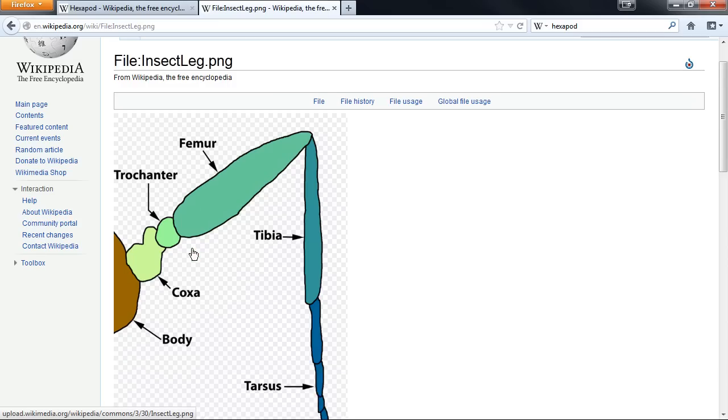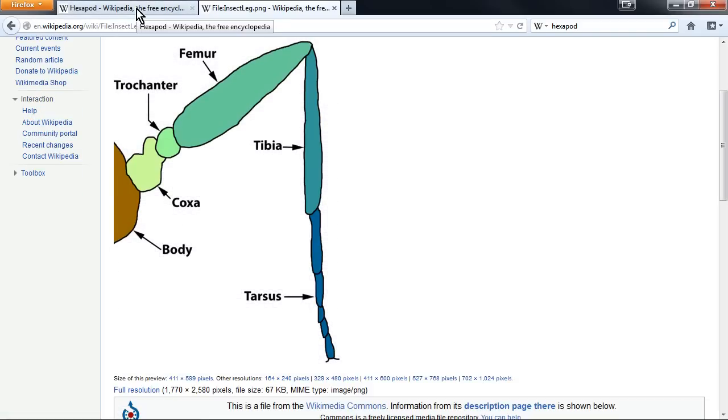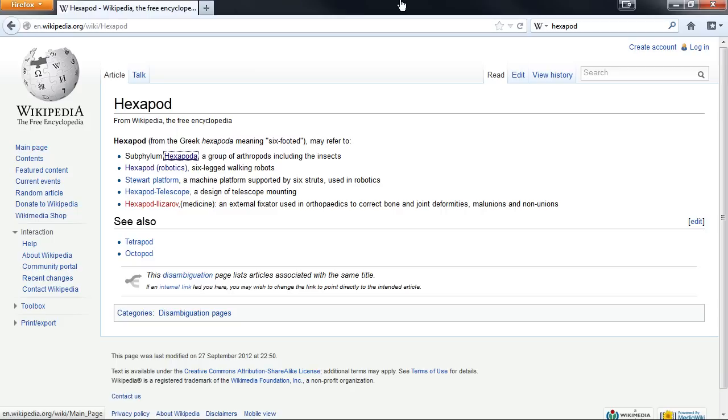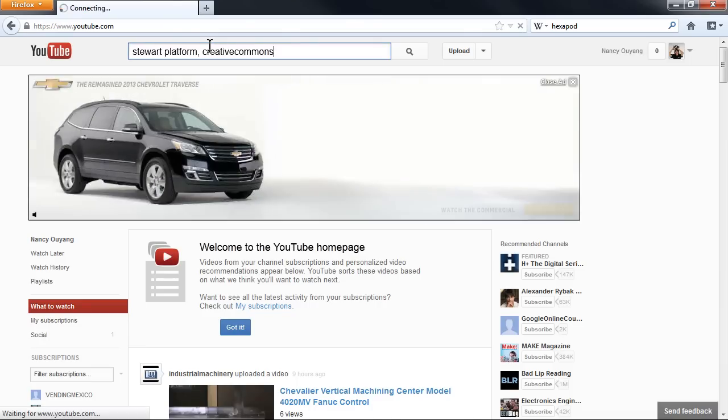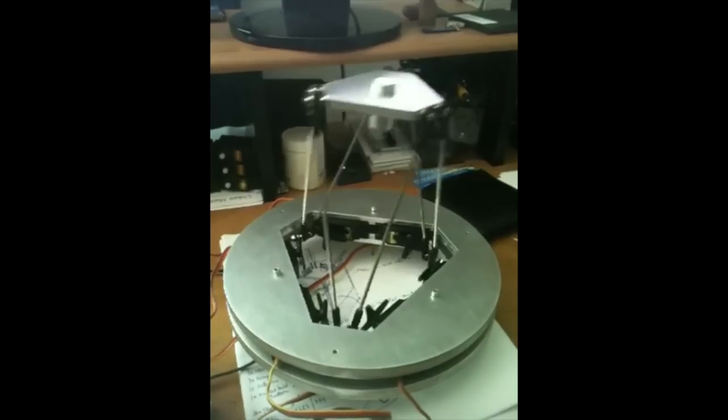In Arduino code for my robot hexapod, you can find references to the coxa, femur, and tibia segments of an insect leg. Hexapod can also refer to a type of robotics platform called the Stewart platform, which uses six servos. A video of a DIY one can be seen here.